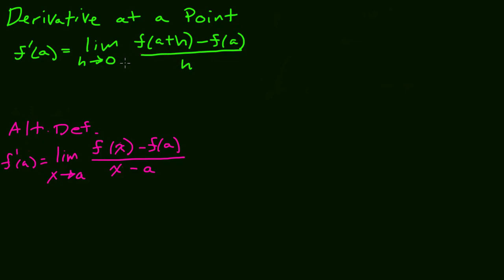The first one is our main formula: f prime of a is equal to the limit as h goes to zero of f of a plus h minus f of a, all over h. We also have the alternate definition, which says f prime of a is equal to the limit as x gets closer to a of f of x minus f of a over x minus a.